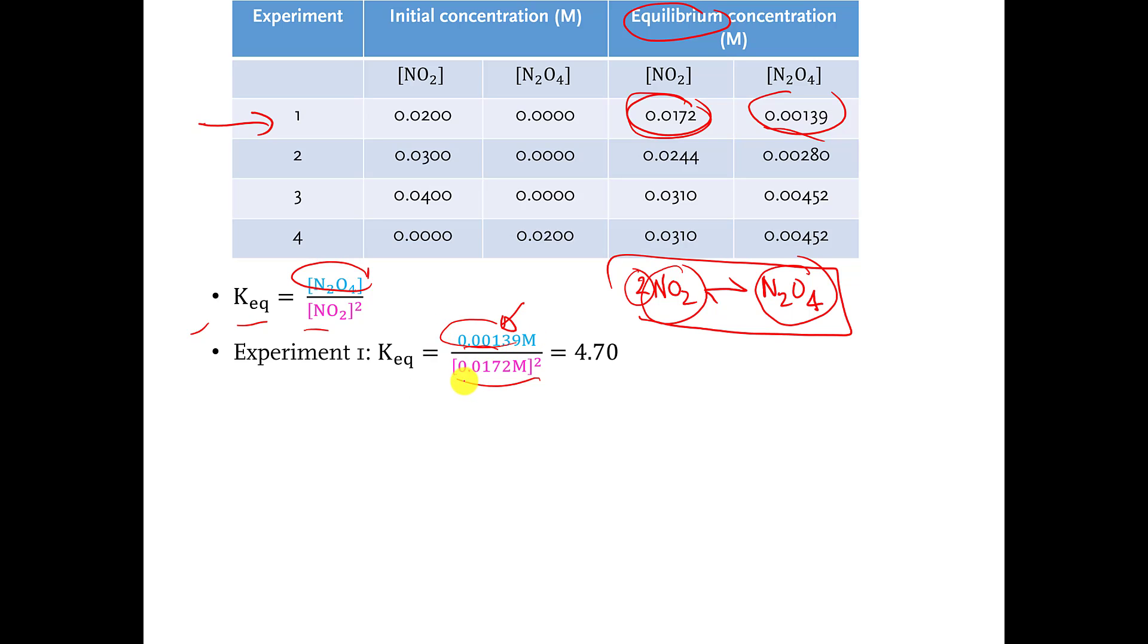And if we do this out, if we do 0.00139 divided by 0.0172, we end up with a number of 4.70. If you care about the units, and there's a weird thing about equilibrium constant that you usually do not write the units for reasons that I'm not going to go into, it would be molar in the top divided by molar squared in the bottom, so the unit would be molar to the negative 1 power. But for reasons that I'm not going to go into, most people don't write the units down. So the equilibrium constant for experiment 1 is 4.70.